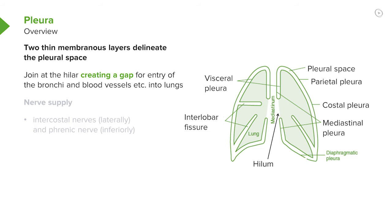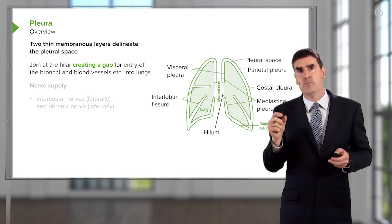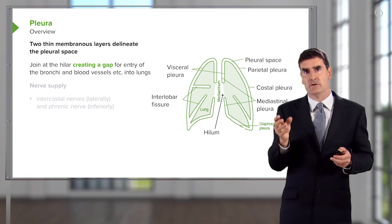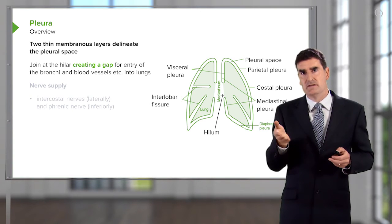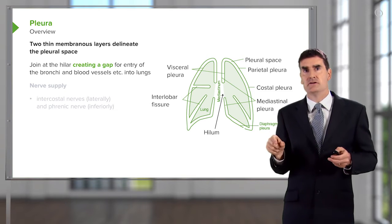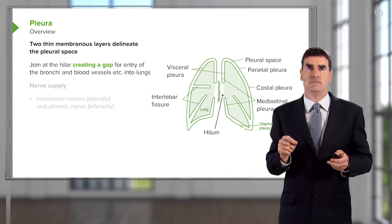That gap has a little bit of fluid in it in normal people, but it's a potential gap that can be filled up with air or fluid during disease situations. The visceral and parietal pleura merge at the hilum, where there's a hole in the visceral pleura created by this merging that allows entry of the blood vessels and the right and left main bronchi into the lungs.